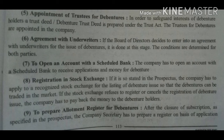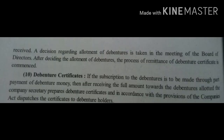Ninth is to prepare an allotment register for debentures: after the closure of subscription as specified in the prospectus, the company secretary prepares a register to record all applications received. The allotment of debentures is decided in the meeting of the board of directors — how much is to be allotted — and the process of remittance of debenture certificates is commenced. If subscription is made through part payment, after receiving the full amount, the company secretary prepares the debenture certificate and, in accordance with the provisions of the Companies Act, dispatches the certificate to the debenture holder.